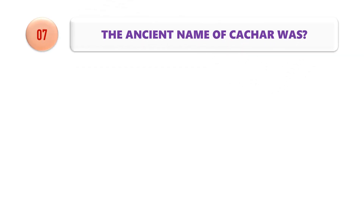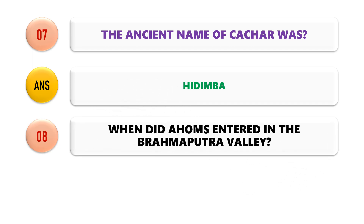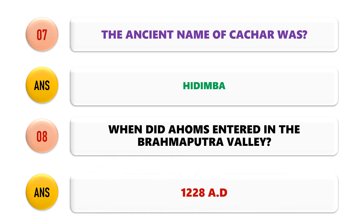Question No. 7: What was the ancient name of Cachar? The ancient name of Cachar was Hidimba. Question No. 8: When did the Ahoms enter the Brahmaputra Valley? The Ahoms entered the Brahmaputra Valley in the year 1228 AD.